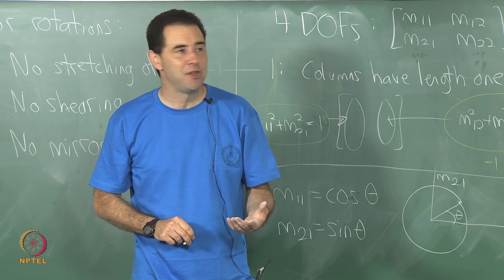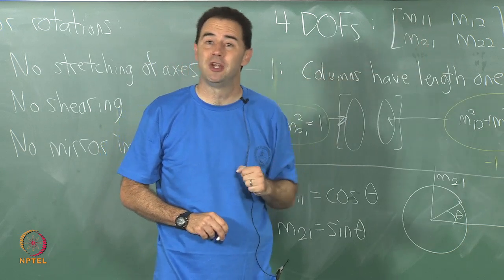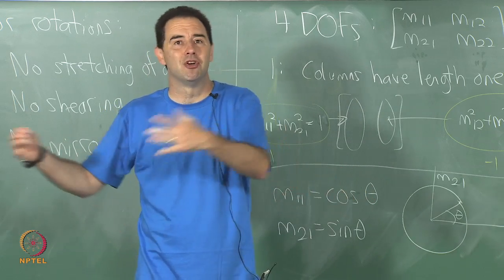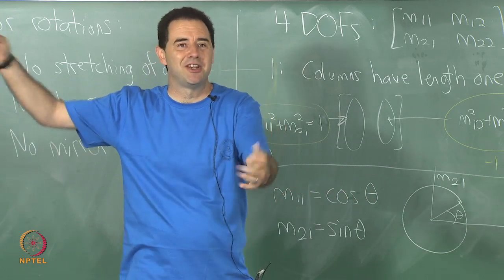Otherwise you will get confused. You will think you have huge errors over in this part of the rotation space and very tiny errors over in this other part, when in fact the errors might be the same in terms of how much the body is actually rotating.